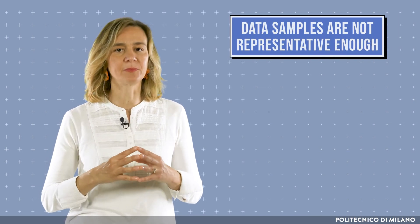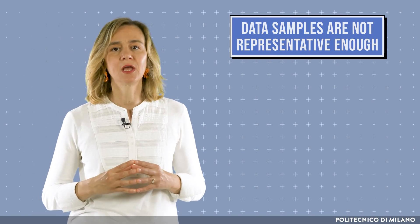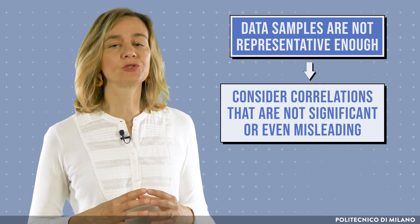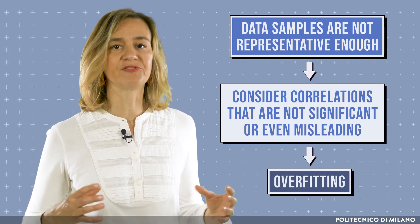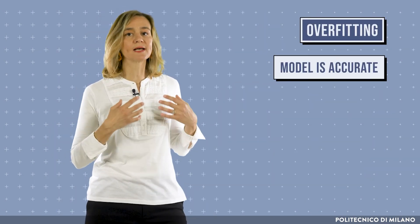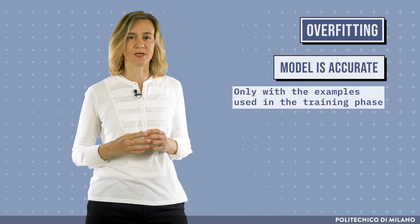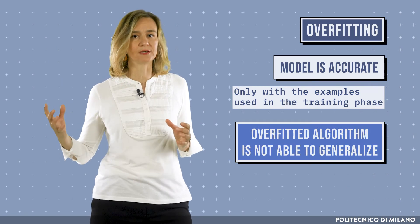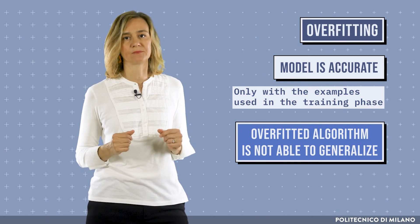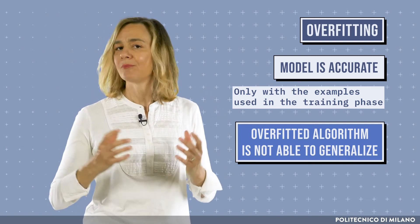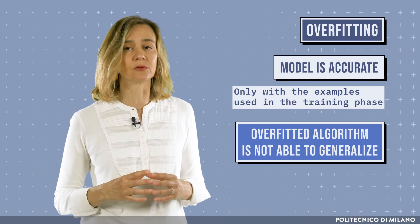A possible assumption can concern the mechanism used to generate data samples to train the algorithm. If these data samples are not representative enough of the population that is of interest in that particular situation, the risk is to consider correlations that are not significant or even misleading. These and similar assumptions bring to a well-known problem in machine learning, that is called overfitting. Overfitting occurs when the model is accurate only with the examples used in the training phase, whereas its performance decreases in the test phase. In other words, an algorithm that is overfitted with respect to the examples is not able to generalize. It's like a map which is very precise with respect only to a specific area of a city, but not very much detail for other areas, and therefore not very useful to orient us.